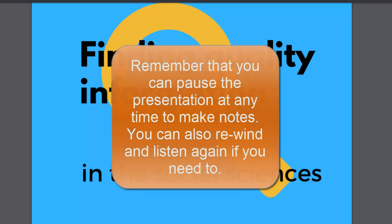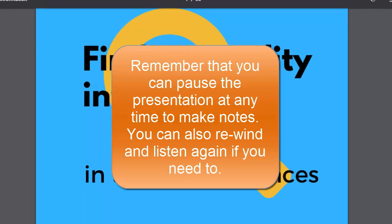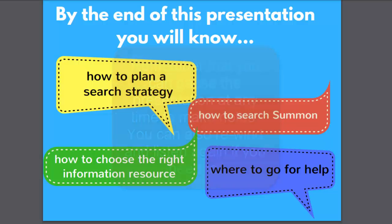This presentation will take you through the basics you need to understand in order to find quality information in the social sciences. By the end of the session we will have covered how to plan a search strategy, the range of information resources available to you and what they're good for, and how to search and where to go for help in the future.